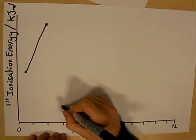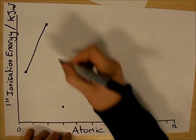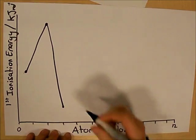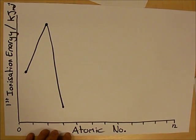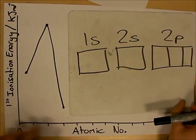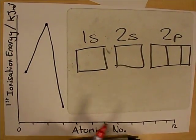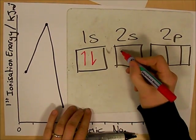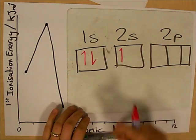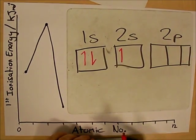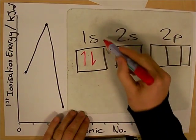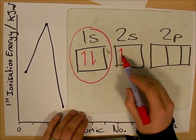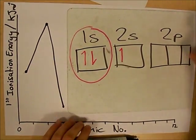The third element with atomic number 3 has a significantly lower first ionisation value. This is due to the fact that for the first time we're putting electrons into the 2s orbital. We've had two electrons placed in the 1s and we're now putting one electron into the 2s orbital, meaning we get shielding from those two electrons and this electron is further away from the nucleus.